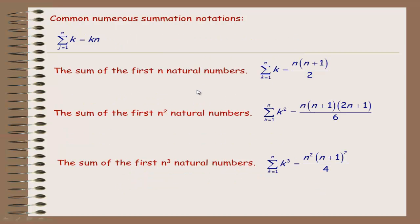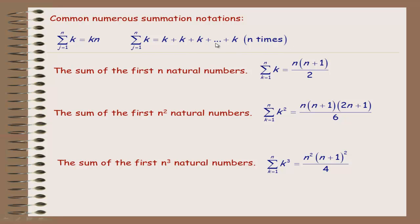Some common numerical properties of summation notation: if the sum term k is completely independent of index j, then every term equals k regardless of what j is. Writing this out — when j is 1 the term is k, when j is 2 the term is still k, and so on up to n. There are n terms, all equal to k, so the summation simplifies to k · n.